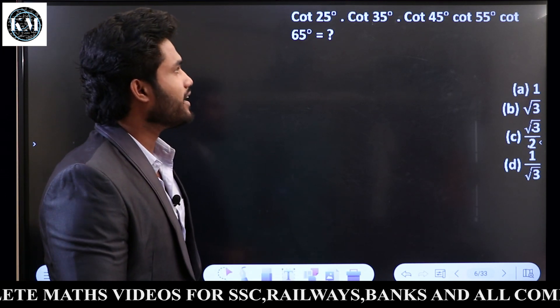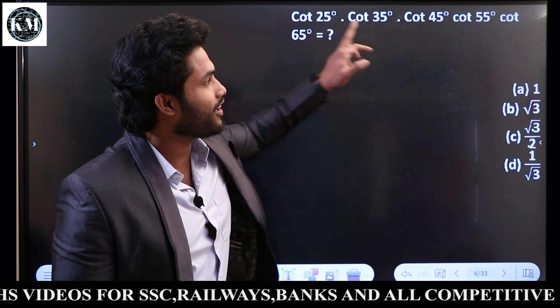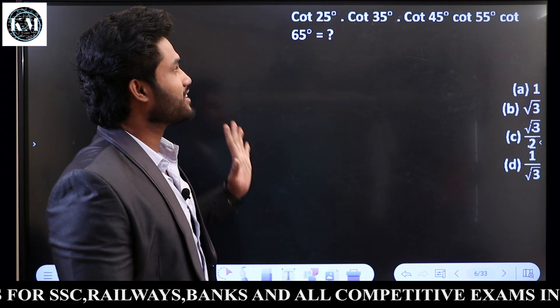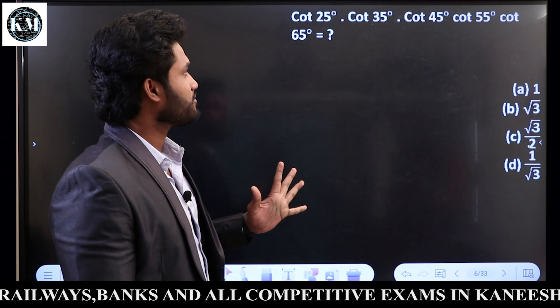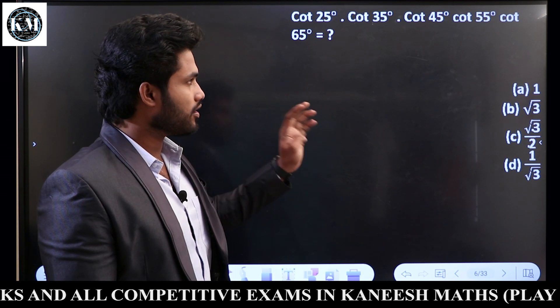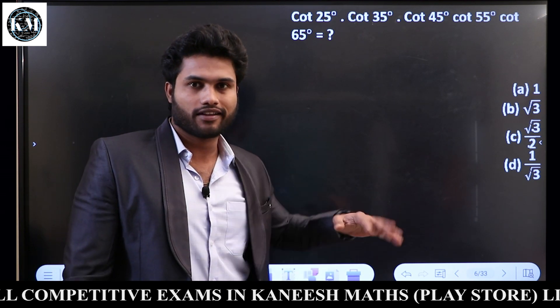Cot 25 × Cot 35 × Cot 45 × Cot 55 × Cot 65. These are the given values. Cot 25, Cot 35, Cot 45, Cot 55, Cot 65 — it is one of the values.